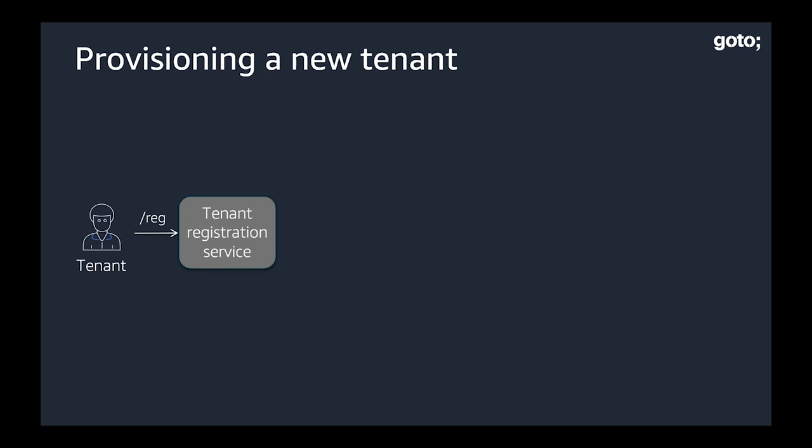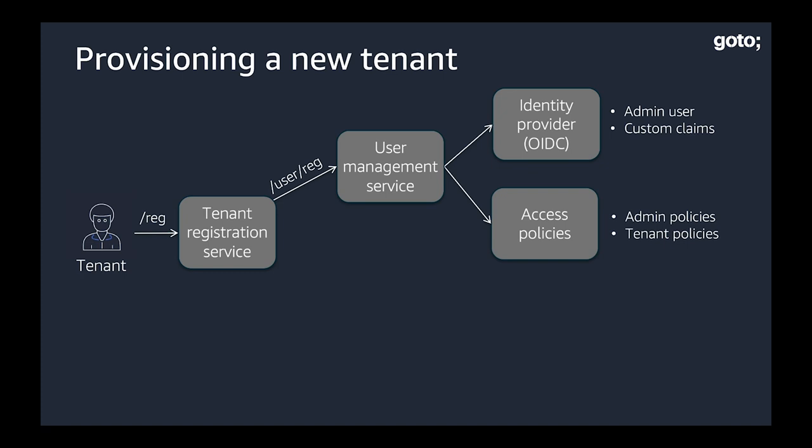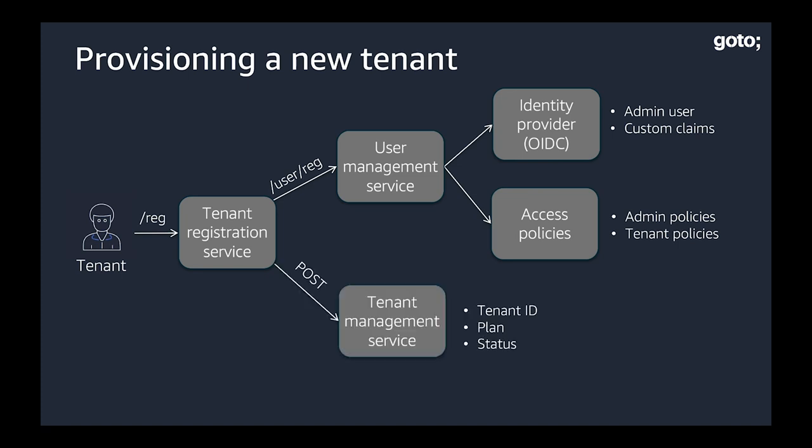This service will go out to a user management service to say we've got to introduce the user into the system, because not only are we provisioning a tenant, we're provisioning a user in that tenant — the initial admin user. Then that user will go out to whatever identity provider there is. I've called out an OpenID Connect provider here because this is really commonly used in SaaS environments and good for federated identity. In that environment we'll create the admin user and also set up any custom claims — this is where we'll connect the tenant context and tenant identity to our admin user's identity — and then we'll also set up any access policies, so whatever our tenant isolation story is, this is the moment at which we would actually go provision and configure those policies.